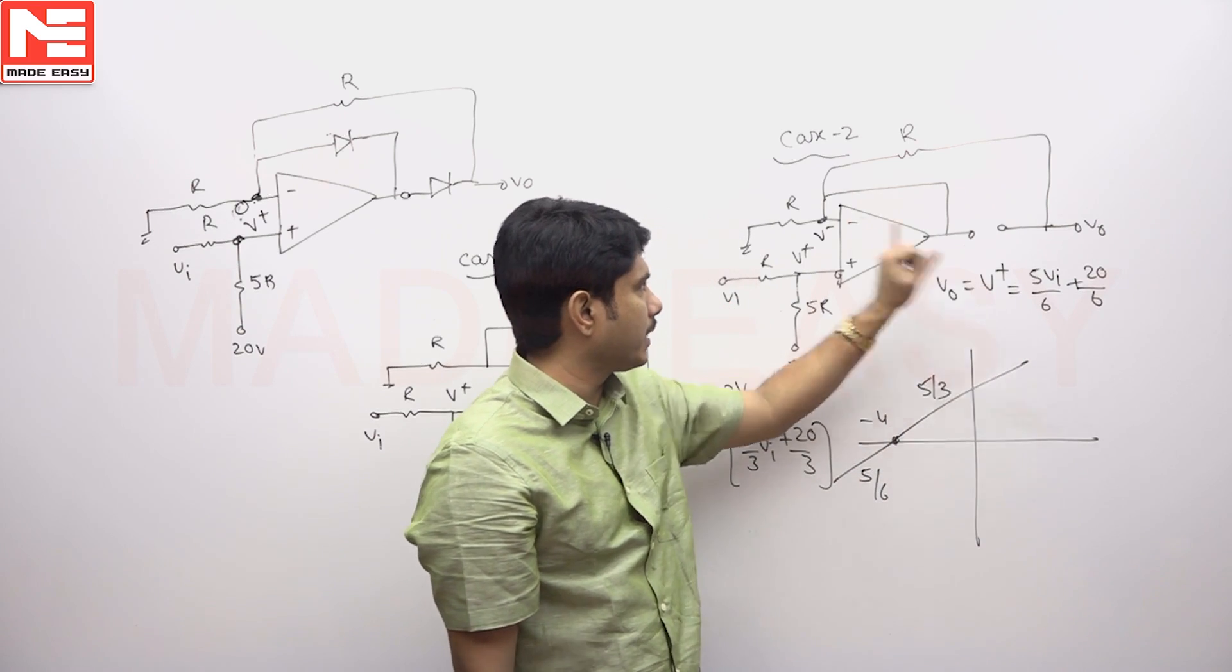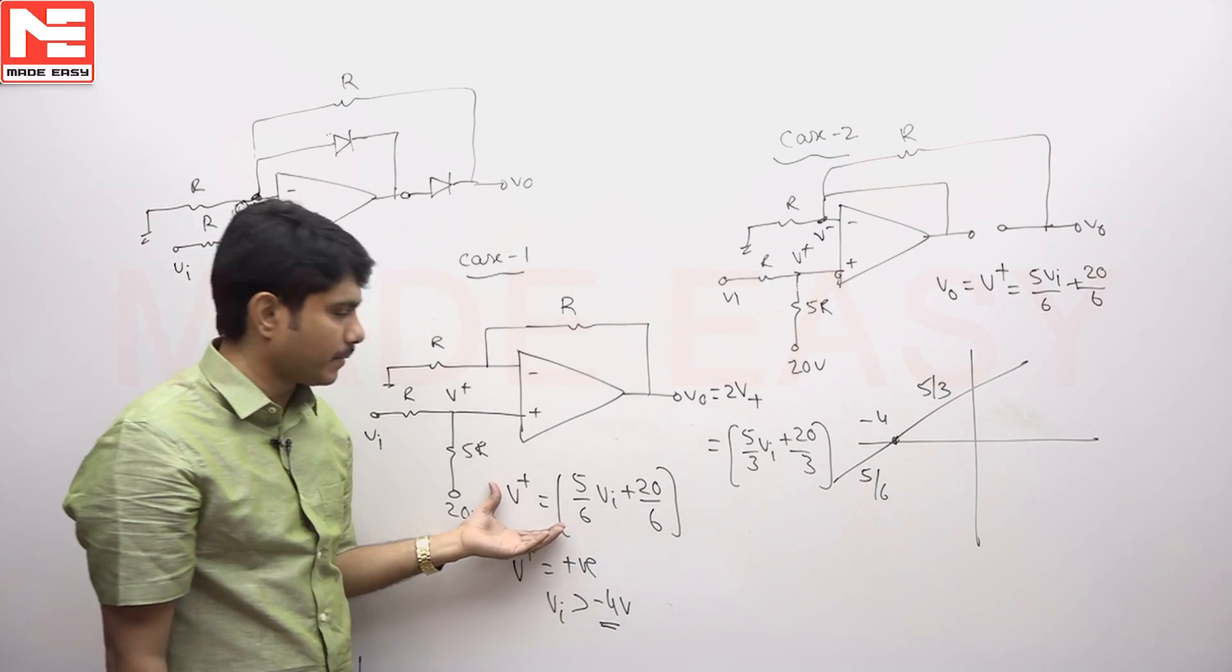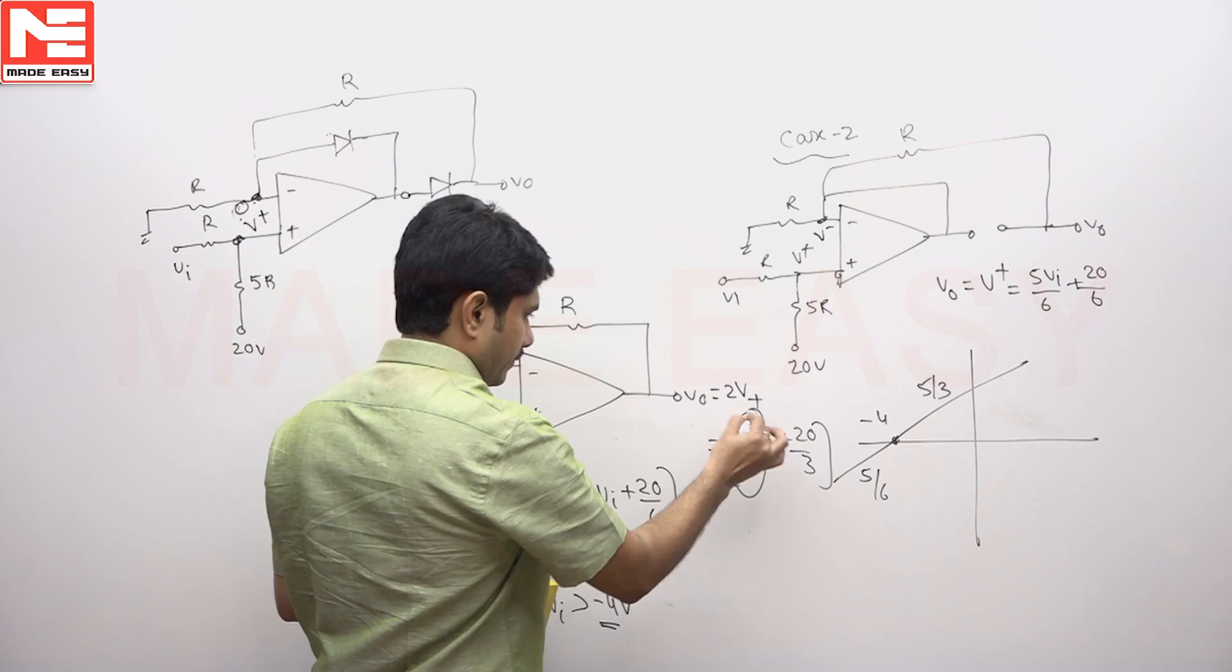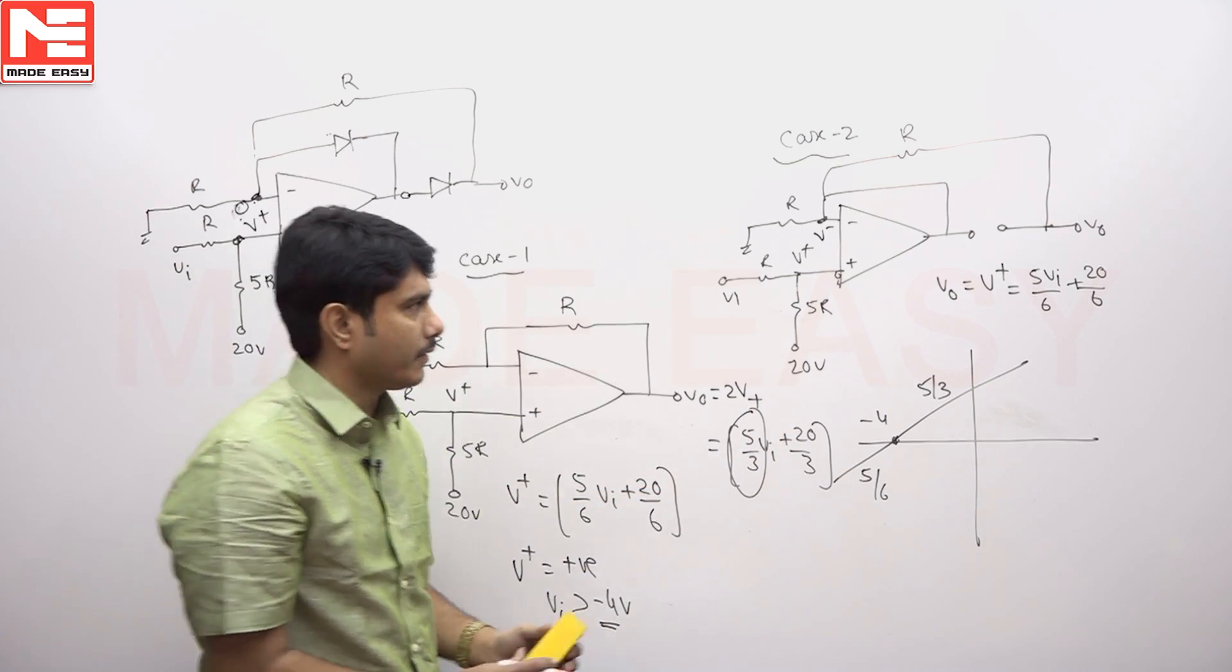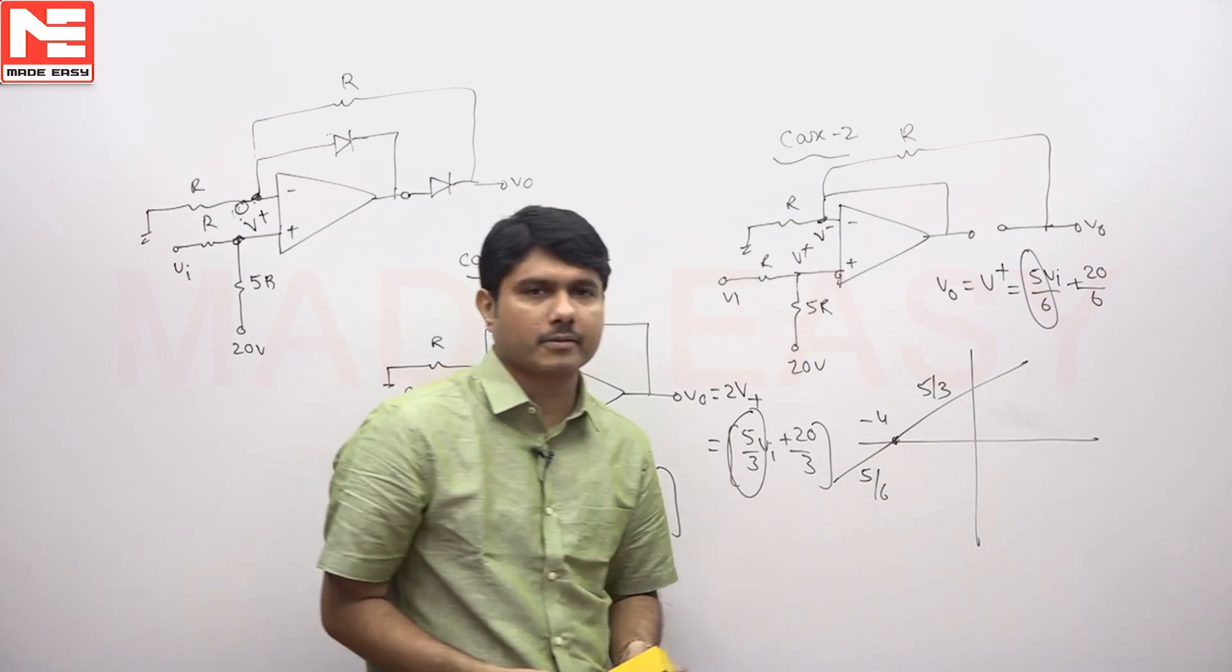This V minus is equal to V0 directly. Then V0 equal to V minus, that is equal to V plus. In the first case, VI greater than minus 4, the slope is showing 5 by 3. But whenever VI is less than minus 4, it is showing 5 by 6 slope.